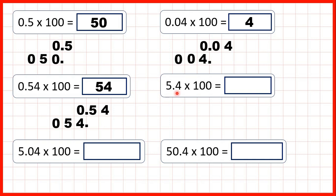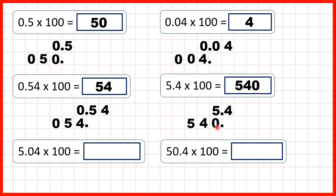Now we have 5.4 times 100. Again we write the number out, copy down the decimal point and move the digits two squares to the left. But now we have an empty square before the decimal point, and we know that the place value before the decimal point is the ones column and we can't have an empty ones place value column. So we need to write a zero in this square. Now that we have the decimal point at the end, we know our answer is a whole number — that's 540. It's really important to remember the zero in the ones, because without it the five would be in our tens and the four would be in our ones. We need the zero to show that the four is four tens and the five is now in the hundreds column.